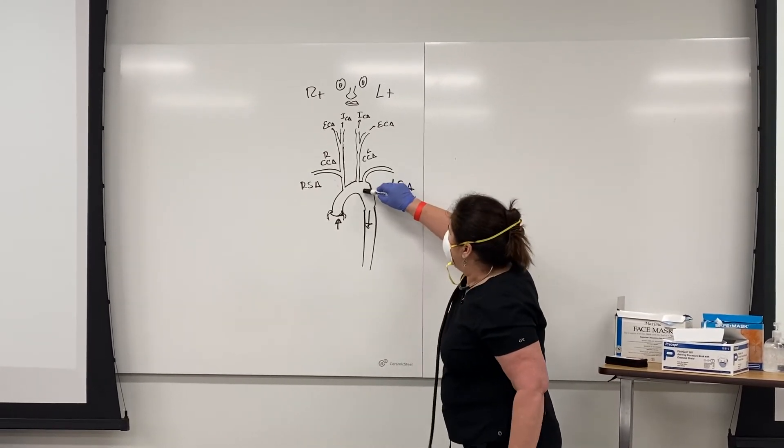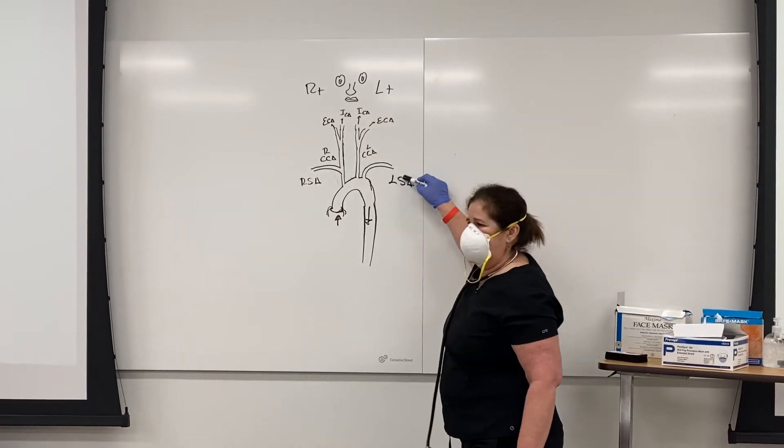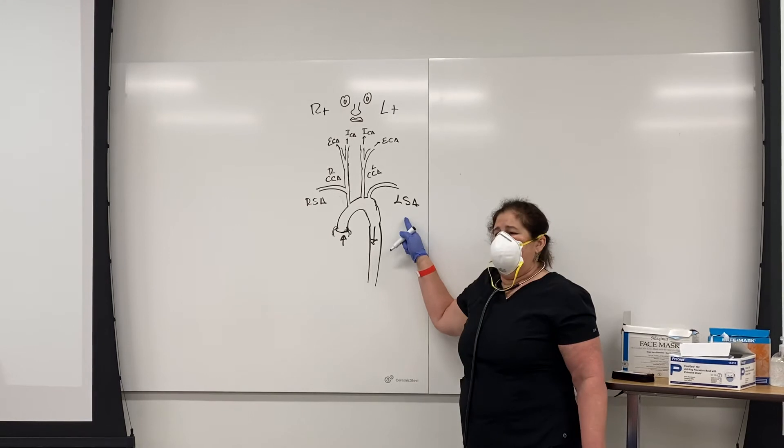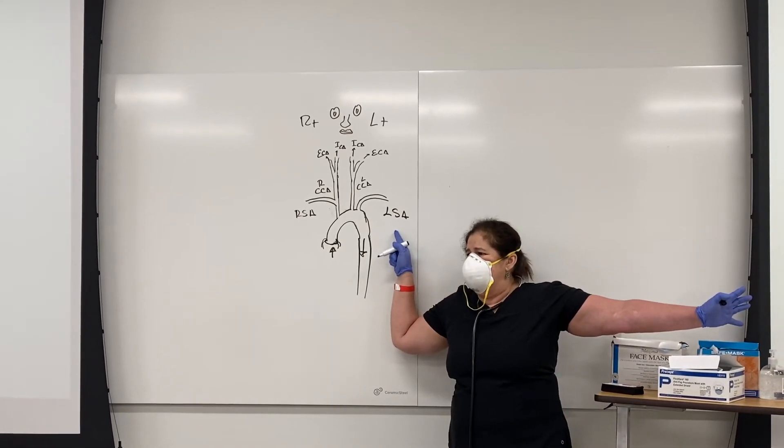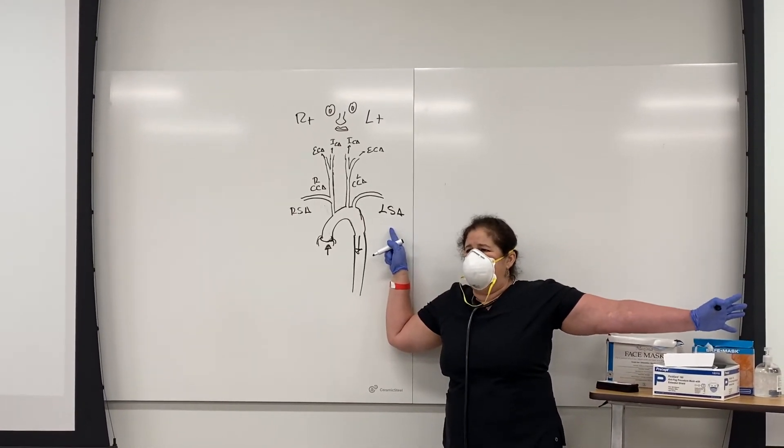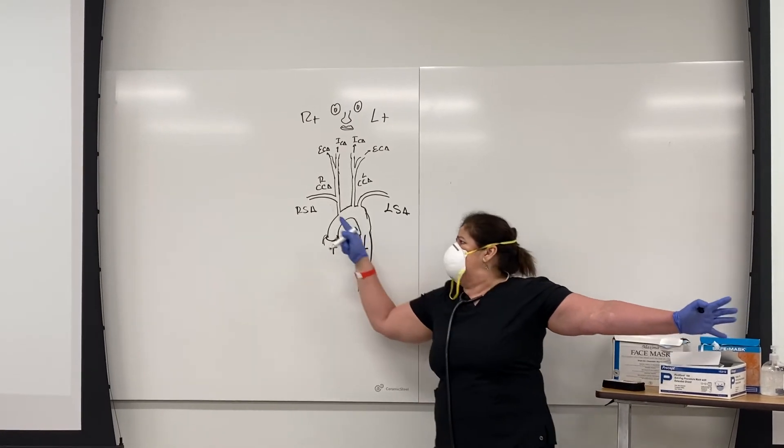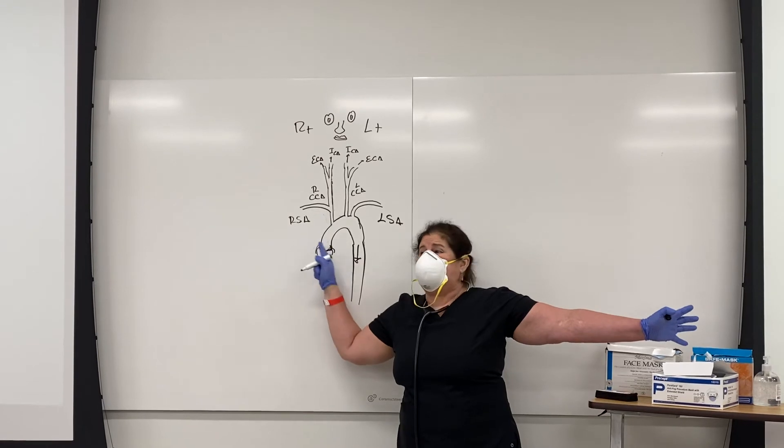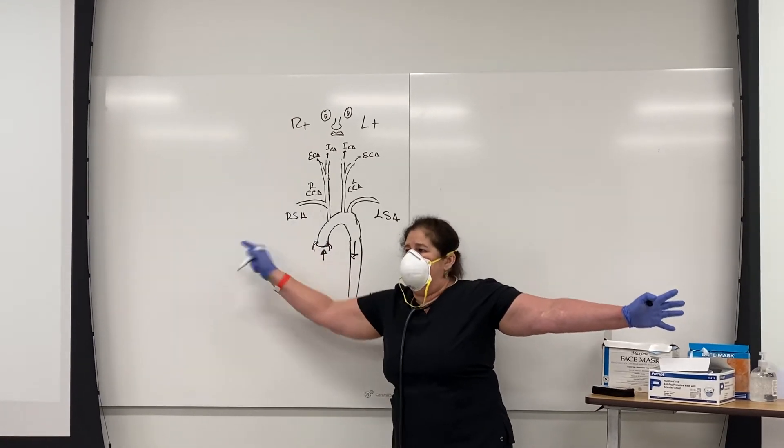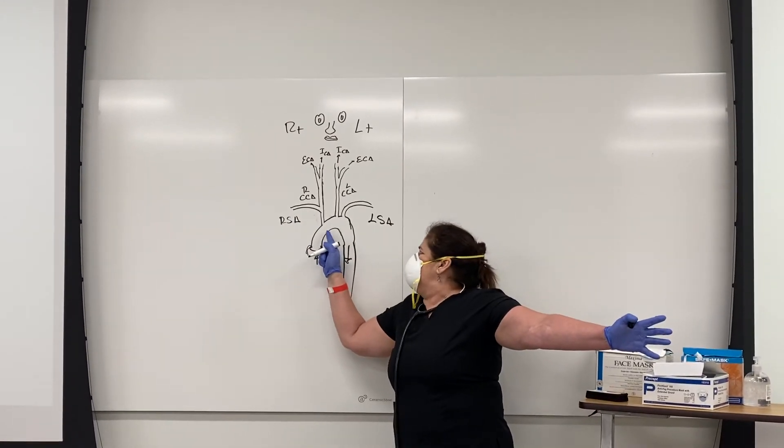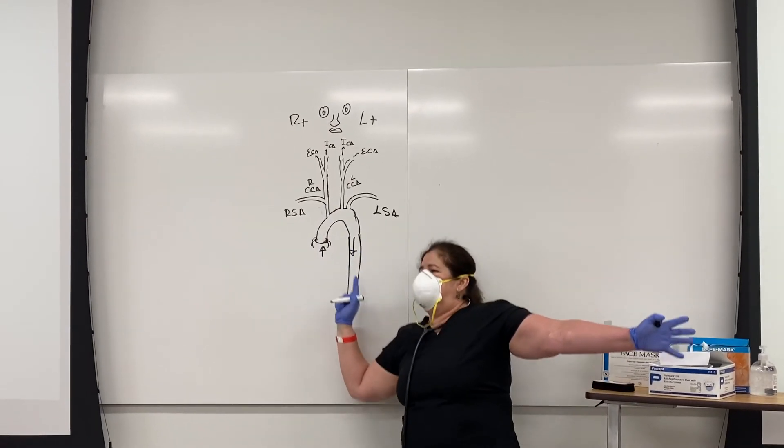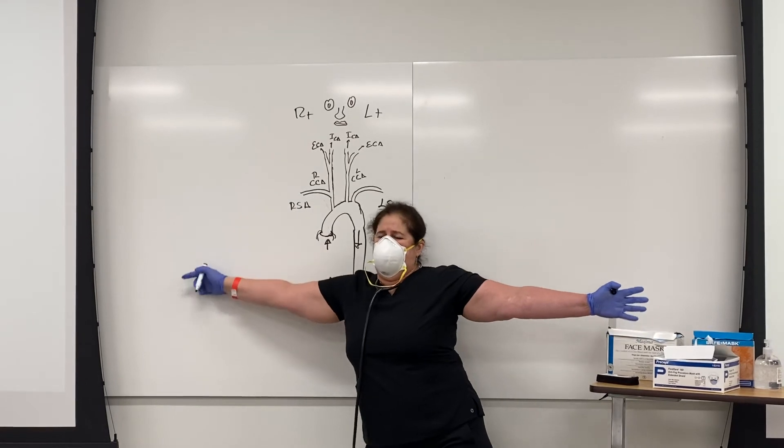Then we have the left subclavian artery. The left subclavian artery is going to go to the left arm. And the right subclavian artery—remember that it's living longer because we need to go to the brachiocephalic trunk first, and then the right subclavian artery.